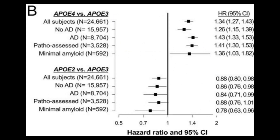The next piece of data is a hazard ratio, which measures survival of one group compared to another. A ratio of one means no difference; below one means that group is surviving better; closer to two means that group is more at risk of dying. Comparing APOE4 to APOE3, regardless of whether people had Alzheimer's disease or not, those with APOE4 were more at risk to die. Comparing APOE2 to APOE3, people with APOE2 were going to survive longer and be less at risk for dying.